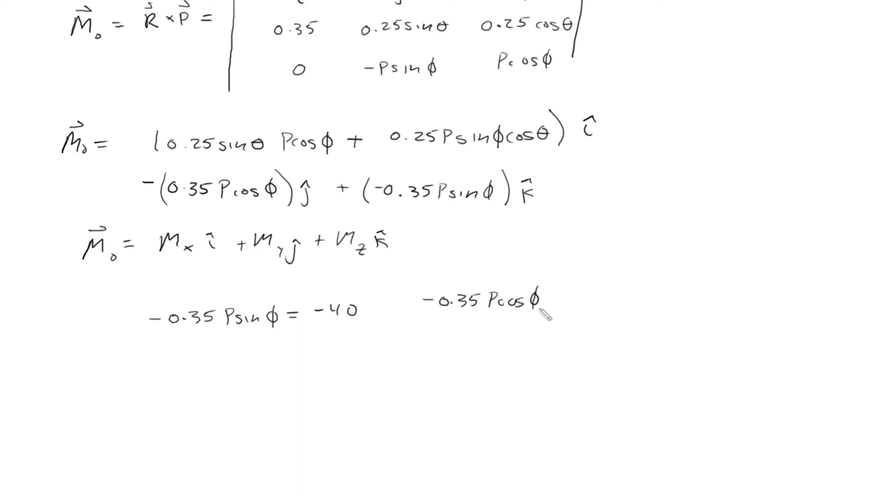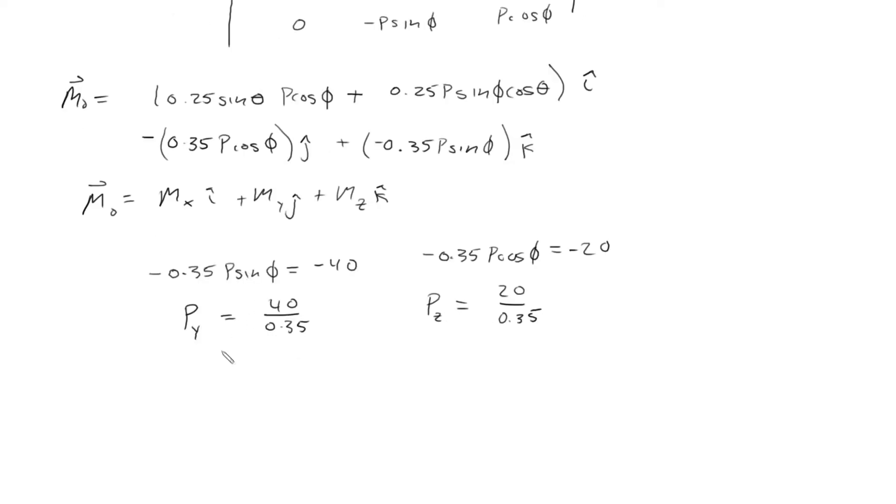And for the y component we could say that equals negative 20, so this will be negative 0.35 P cosine phi equals negative 20. We can define this as Py, the force in the y direction, equals 40 divided by 0.35. And we could define the z component as Pz equals 20 divided by 0.35. After plugging into my calculator we get the y component of the force which is going to be 114.286 newtons and the z component of the force will be 57.143 newtons.